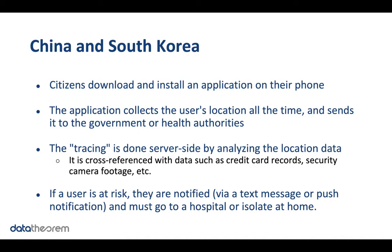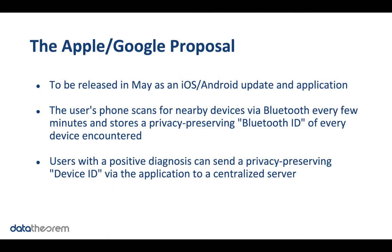By doing this tracing, if a user is found to be at risk — potentially infected by running into an infected person — they get notified via a text message or push notification, and then they have to go to the hospital or stay at home. The general idea is that a lot of location data is being sent to a central server. This has privacy implications because the government has the location of all citizens all the time, which is why other approaches have been looked into.